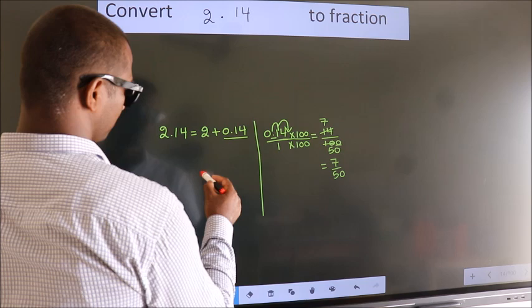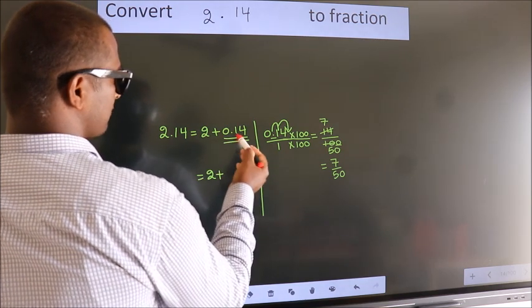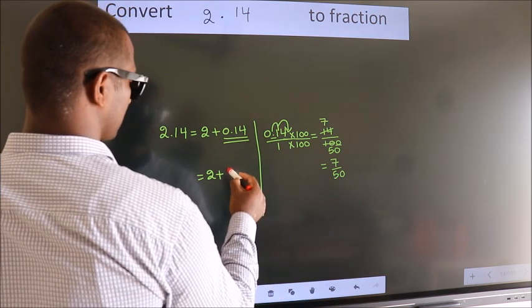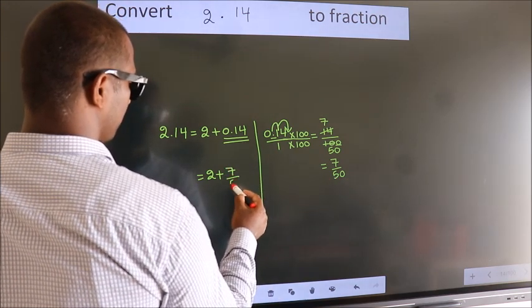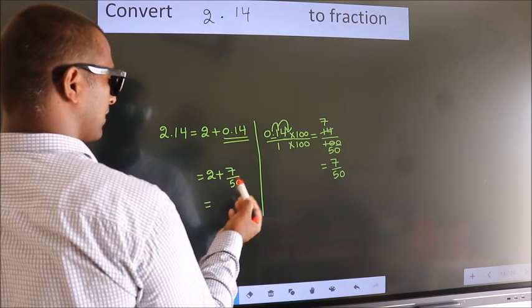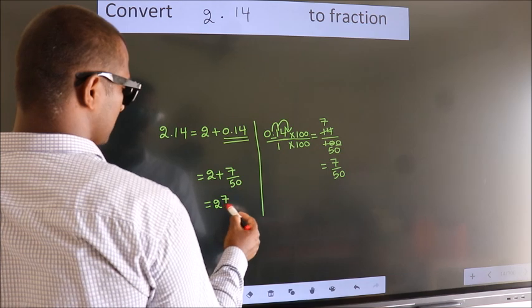Now here, 2 plus in place of 0.14 we write this fraction 7 by 50. So 2 plus 7 by 50, in mixed fraction it is 2 and 7 over 50.